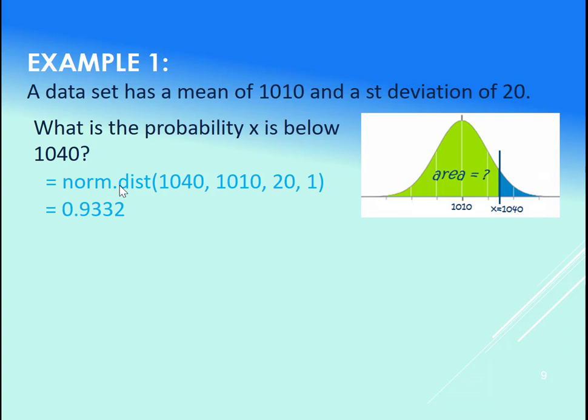So when we plug this into Excel, we get 0.9332 for this norm.dist. We're going to try this in a minute.